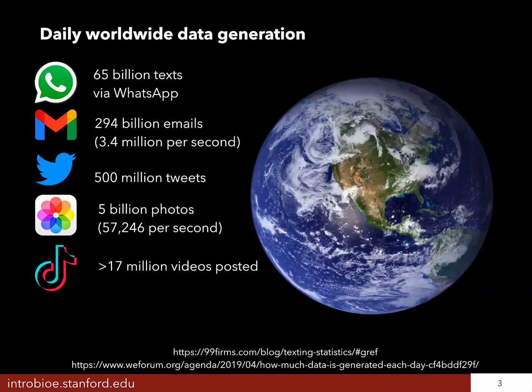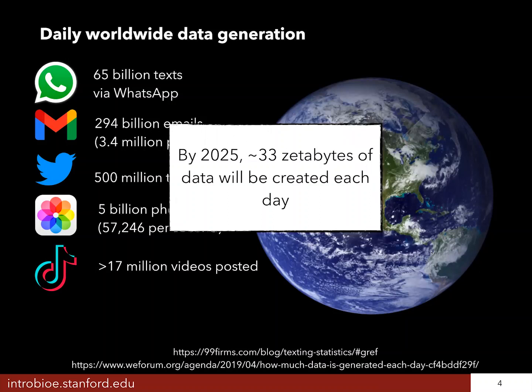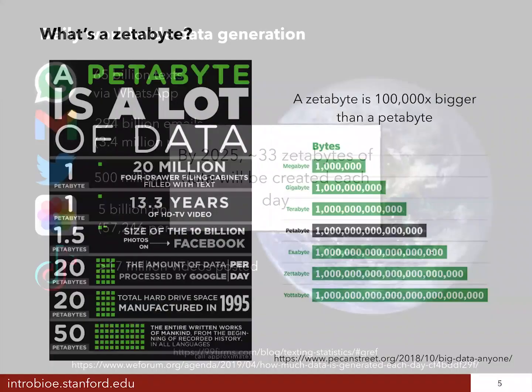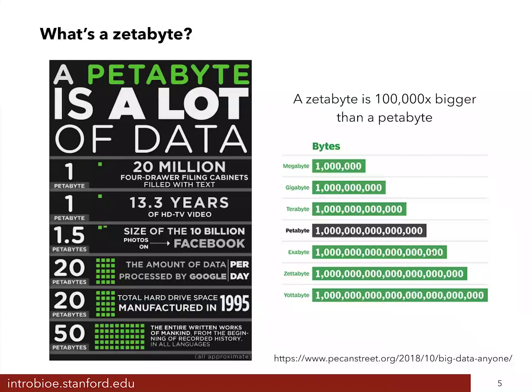Some of it is stored locally on your phone, but some of it is stored in the cloud. We know that this data is stored because we can go back and access it later — I can read text messages that I sent yesterday and look at pictures that I took last year. So we have a looming data storage problem. In 2025, it's predicted that we're going to be generating 33 zettabytes of data each day, and a zettabyte is an insane amount of information. Just for reference, today we usually talk about petabytes of data, and a petabyte of data is a lot of data.